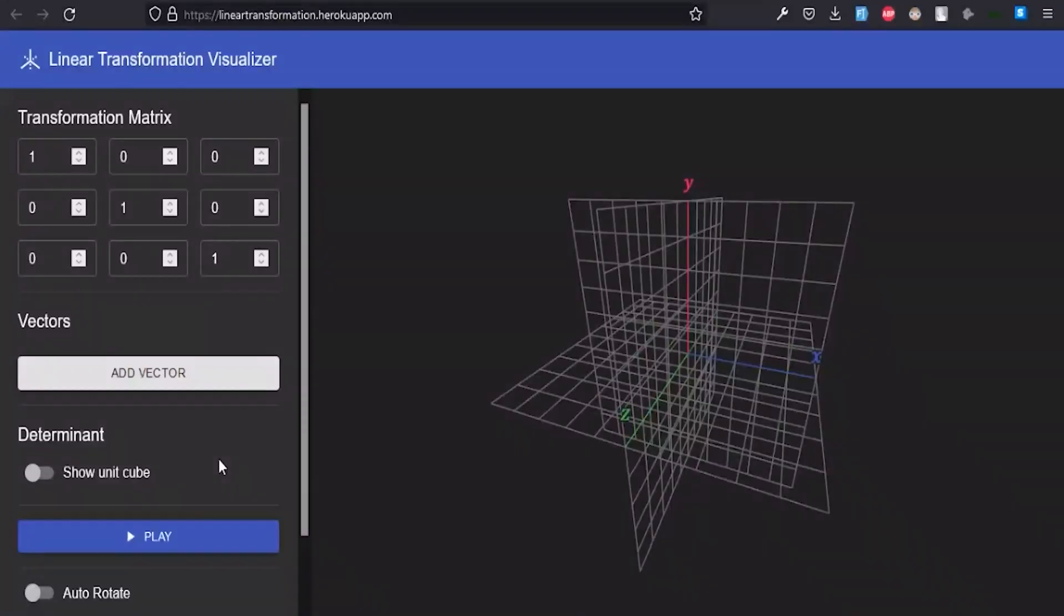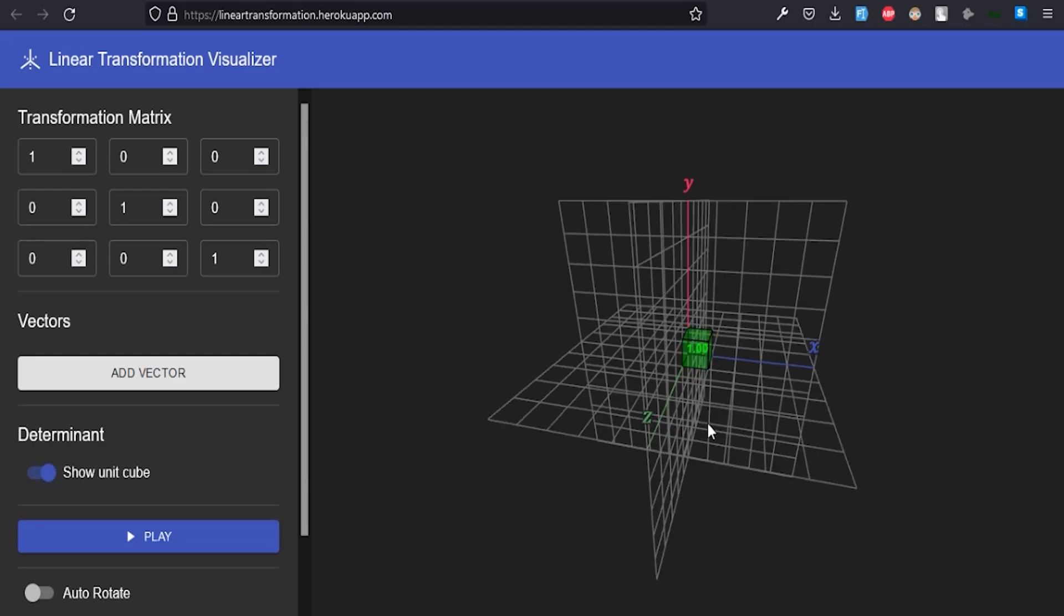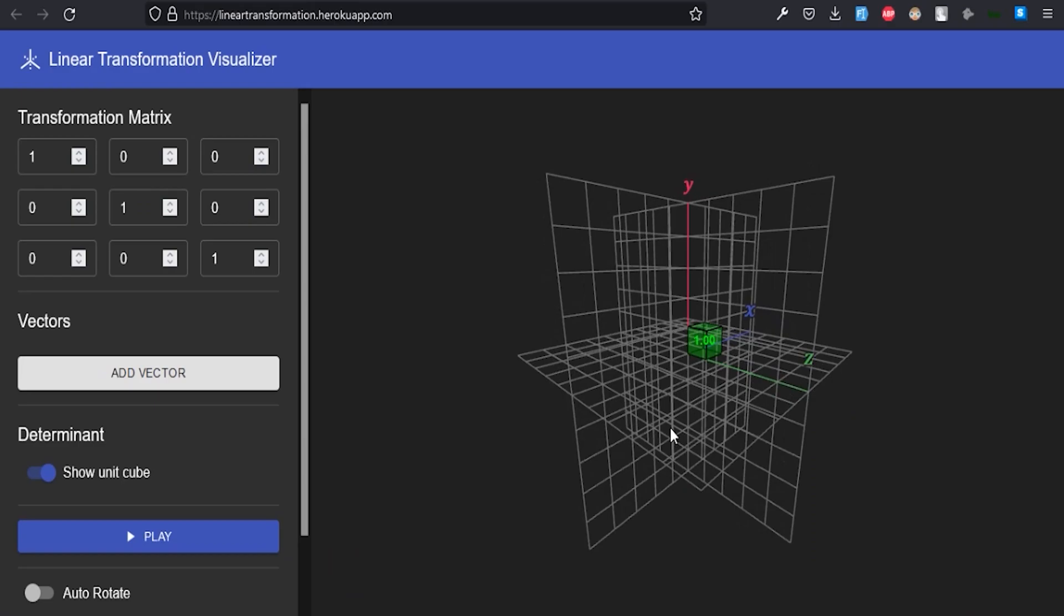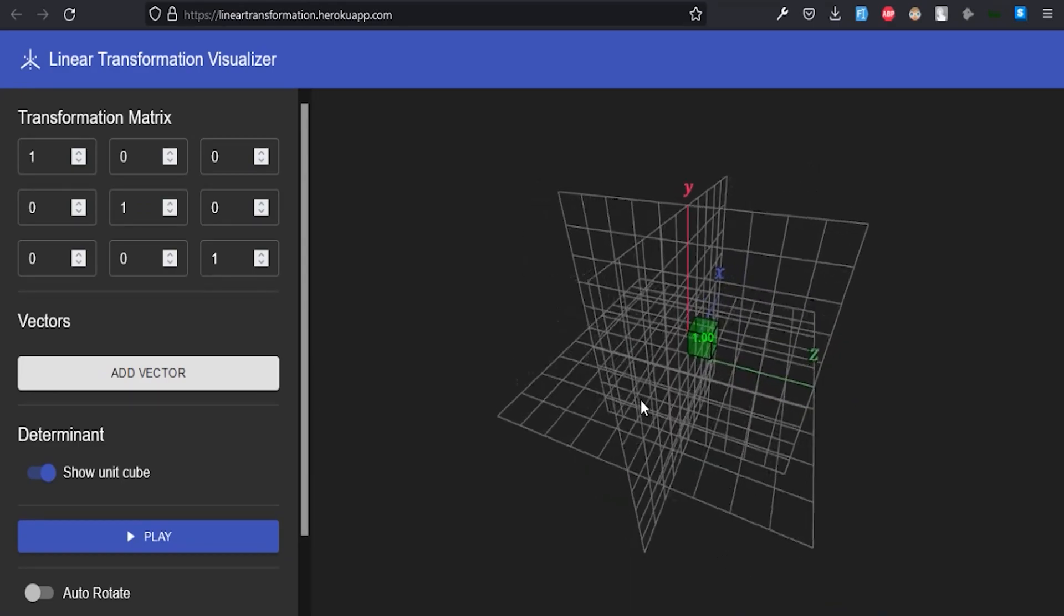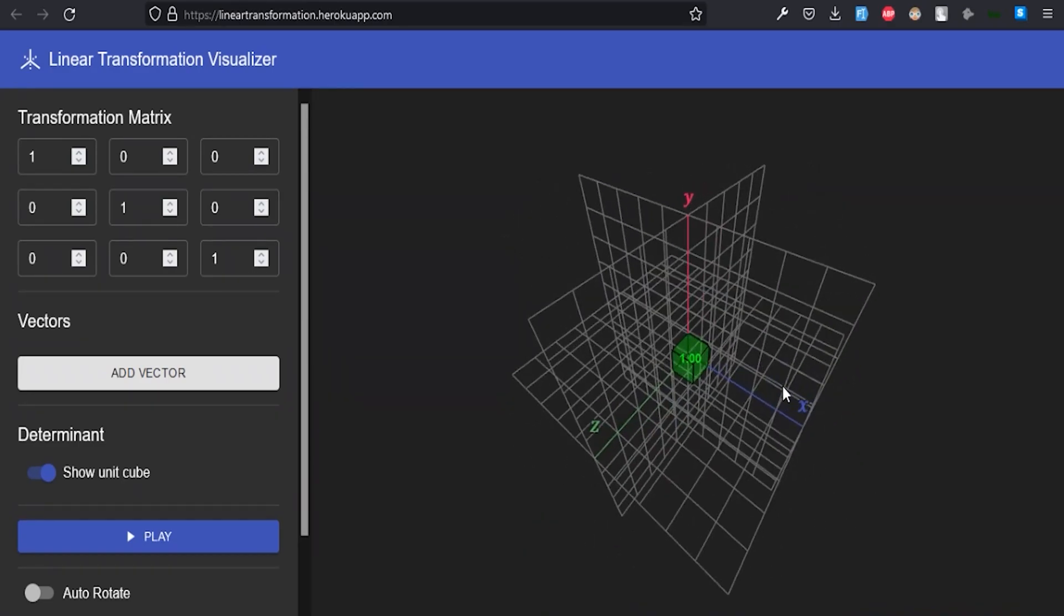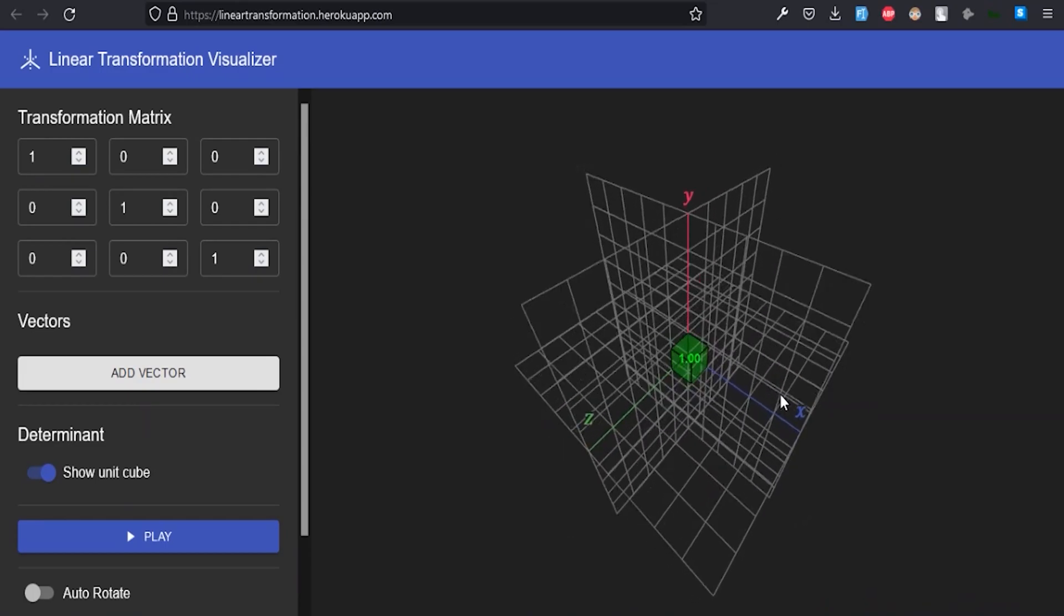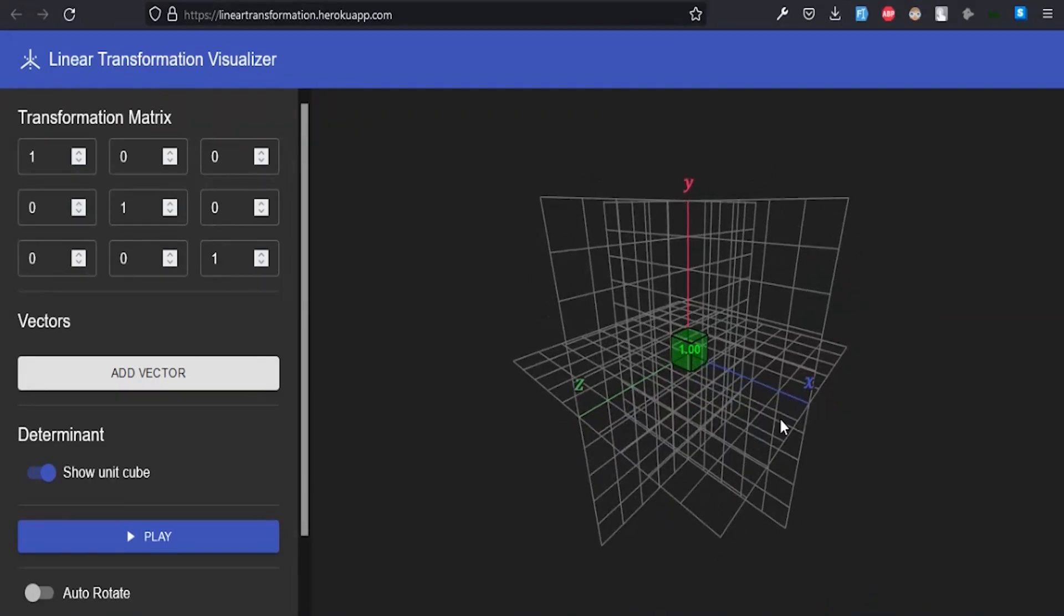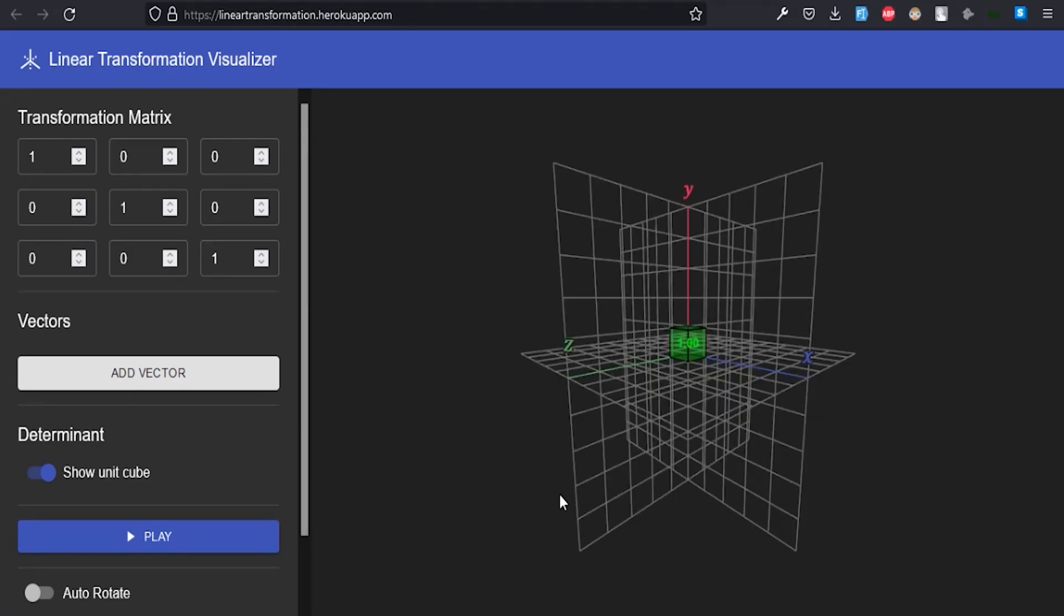In more than two dimensions this idea can be generalized to a parallelopiped with a volume. In geometry a parallelopiped is a 3D shape whose faces are all parallelograms. Also it is intuitive that the unit square from our 2D space translates to a unit cube in 3D space. And instead of the area we talk about the volume of the parallelopiped.